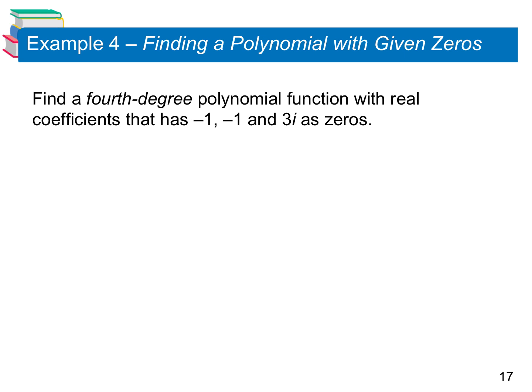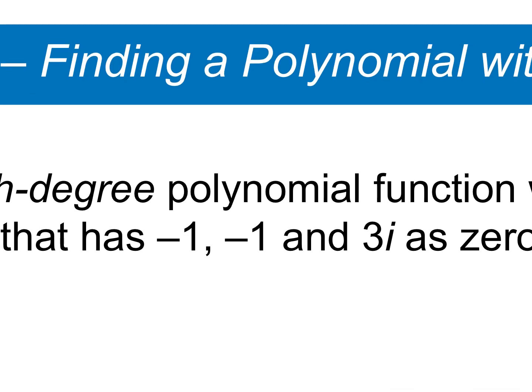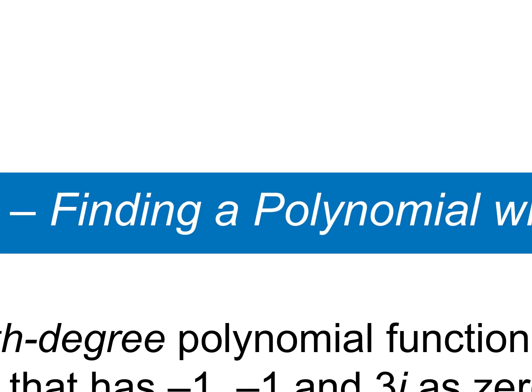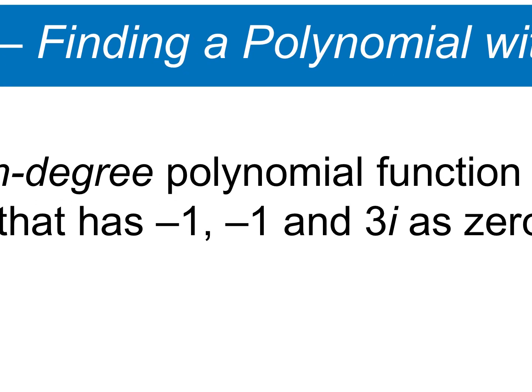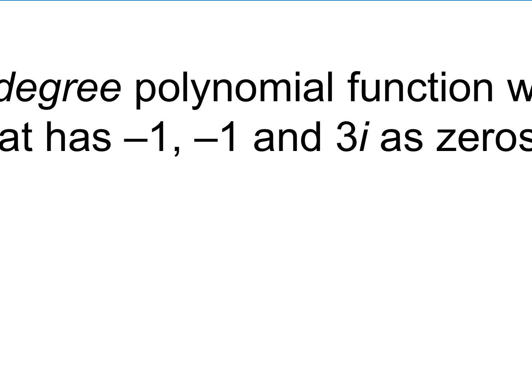So in example 4, we're going to jump right into our examples. It gives us the zeros and we have to work backwards from the zeros. Typically when we solve something, we'd have a polynomial, we'd factor it, and then we'd come up with the zeros. Here we have the zeros — we're going to put it in factored form and then come up with the polynomial. First thing we want to do is make sure we have all of our zeros included. If 3i is a zero, we need its conjugate pair as a zero also. So if positive 3i is a zero, then negative 3i is also a zero.